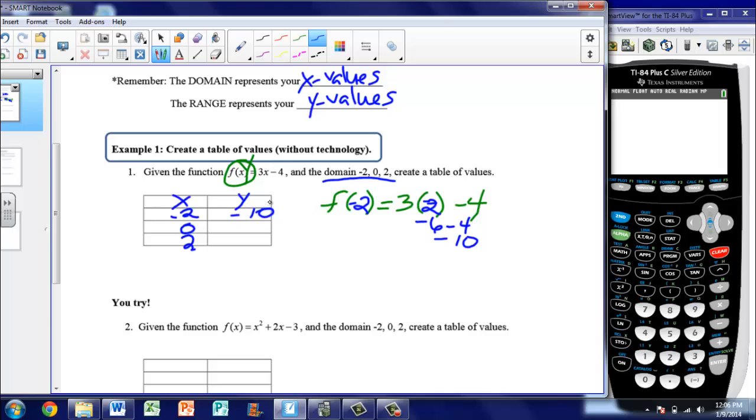Then I repeat the process. So I have my function f(x) = 3x - 4. Notice I left out the x's because in place I'm going to put in a 0. So if I substitute in 0 for my x, 3 times 0 is 0 minus 4 is -4. So when x is 0, the output is -4.